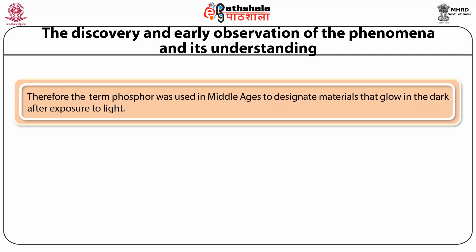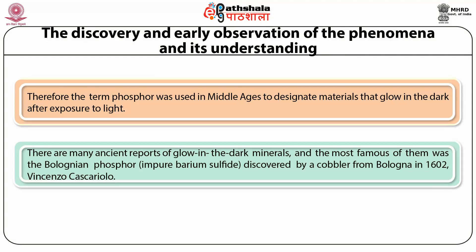The term phosphore was used in the middle ages to designate materials that glow in the dark after exposure to sunlight. There are many ancient reports of glow-in-the-dark minerals, the most famous being the Bologna phosphore, which is impure barium sulphide, discovered by a cobbler from Bologna in 1602. It burns and releases glowing vapours, but the emission of light is actually in the form of chemiluminescence, not photoluminescence — the emitting species are excited by combustion energy, not by absorption of photons.